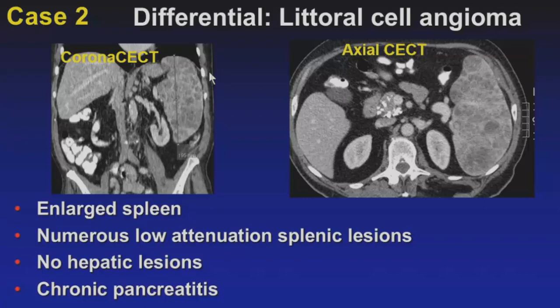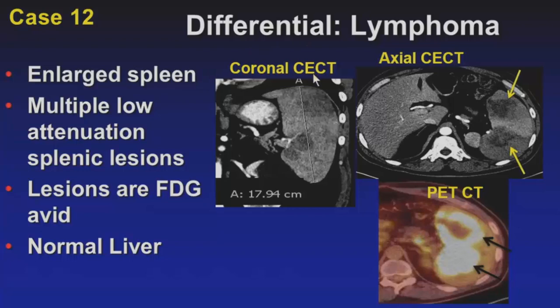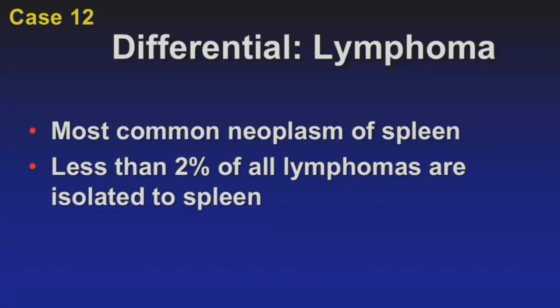Here's a case of lymphoma. Many imaging findings overlap with littoral cell angioma — enlarged spleen with numerous low-attenuation lesions throughout, but no lesions in the liver. On PET scan, aside from a possible area of central necrosis, all lesions were FDG-avid. While lymphoma is the most common neoplasm to occur in the spleen, less than 2% of all lymphomas are isolated to the spleen, so you'll generally see splenic involvement with disease elsewhere.